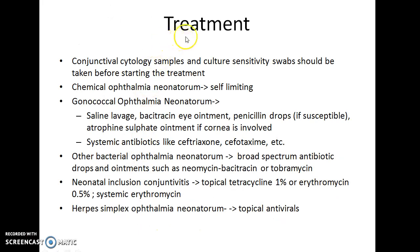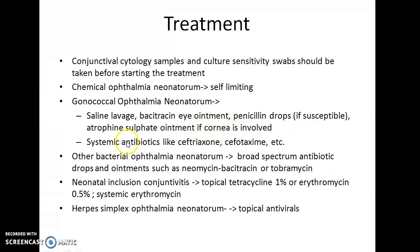How do you treat a case of Ophthalmia Neonatorum? Conjunctival cytology samples and culture sensitivity swabs should be taken before starting treatment. Chemical Ophthalmia Neonatorum is a self-limiting disease. Gonococcal Ophthalmia Neonatorum should be treated with saline lavage, bacitracin eye ointment, and penicillin drops if the strain is susceptible. Atropine sulphate ointment can be given if the cornea is involved. Systemic antibiotics like ceftriaxone and cefotaxime should also be given.